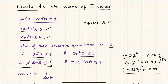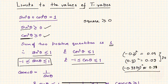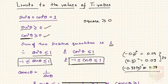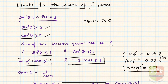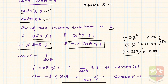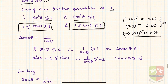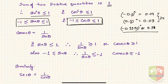So we get our first two ranges: −1 ≤ sinθ ≤ 1 and −1 ≤ cosθ ≤ 1. Both sine and cosine are always between minus one and plus one.